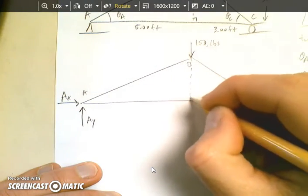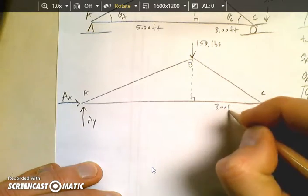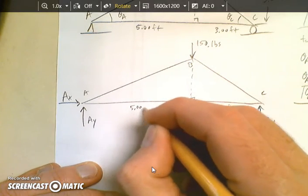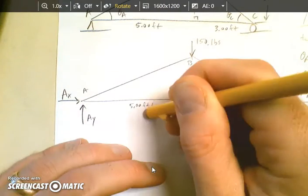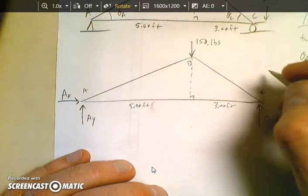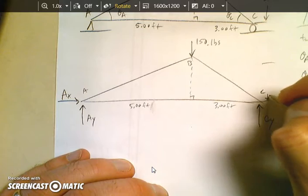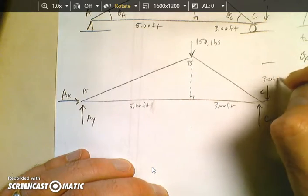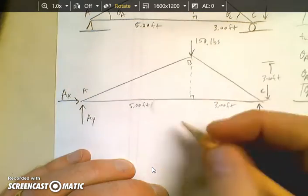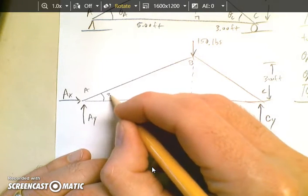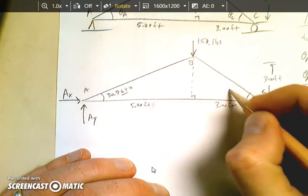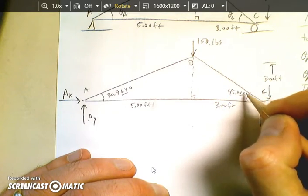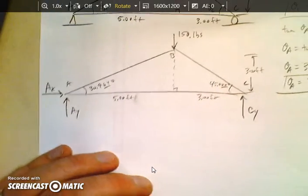Again, you could put your dimensions in here. Three feet. Five feet. And your height here is three feet. And this angle is 30.964 degrees. And this angle here is 45 degrees. There's your free body diagram.